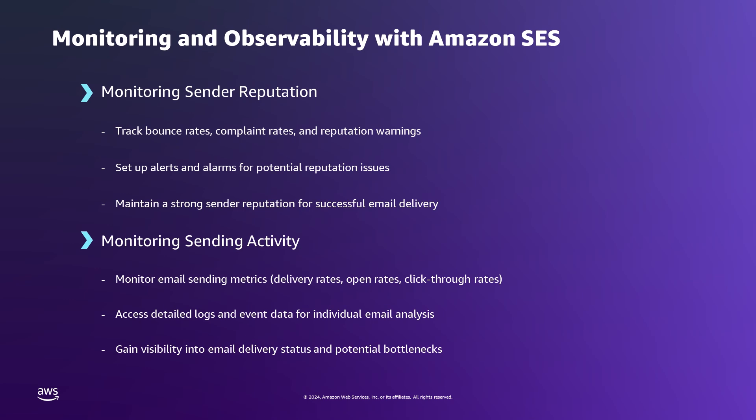Monitoring sending activity provides insights into immediate delivery issues and helps track your usage against your sending quotas. Overall, sender reputation is built over time based on your sending patterns and recipient response, while sending activity provides immediate real-time data. Sender reputation covers the qualitative aspects of your sending practices, while sending activity focuses on quantitative metrics. Poor sender reputation can have long-term effects on your ability to reach inboxes, while poor sending activity habits can lead to immediate delivery issues. Both are important for maintaining good email deliverability in Amazon SES.